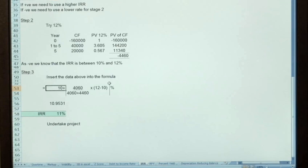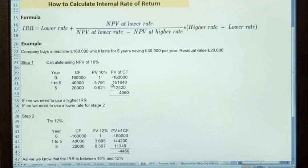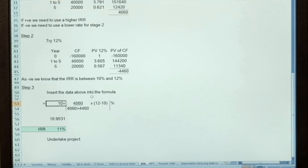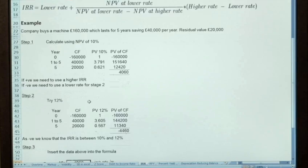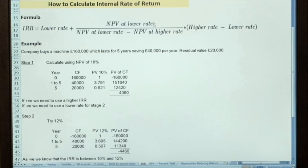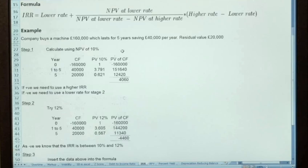So the formula, so we take 10, which is the lower rate. We then have the NPV at that lower rate divided by the NPV at the lower rate and the NPV at the higher rate. So it's simply 4060 divided by 4060 less -4460, so it's obviously 4060 plus 4460.